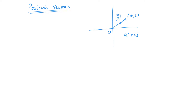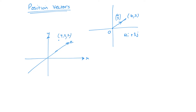This can also be applied to 3 dimensions. So if we have our x, y and z, and we have a coordinate (4, 3, 2), then from the origin, this vector A is going to be the vector (4, 3, 2), or 4i plus 3j plus 2k. So a position vector is from the origin, and it will be the same as the coordinates at the point at the end of that vector.